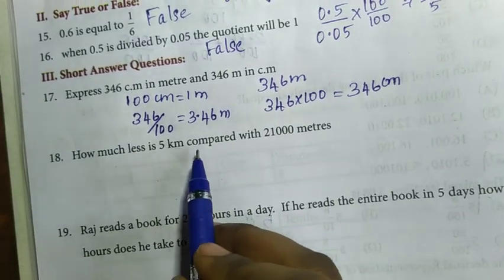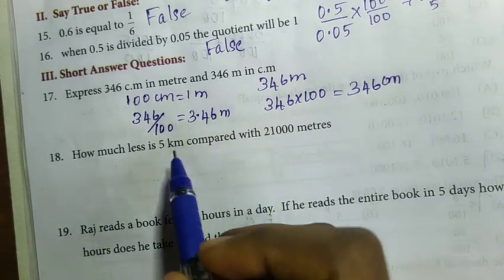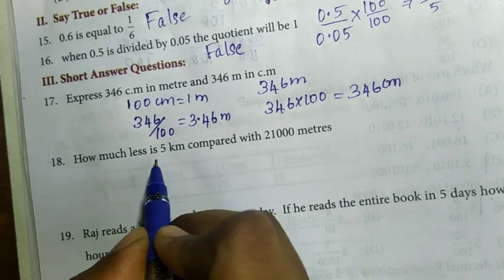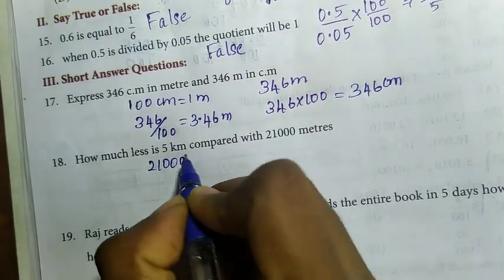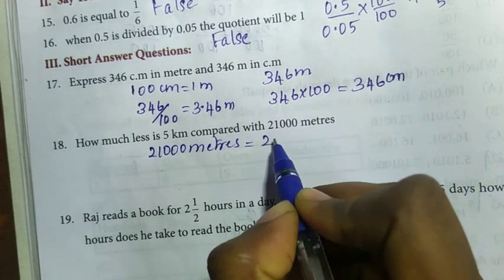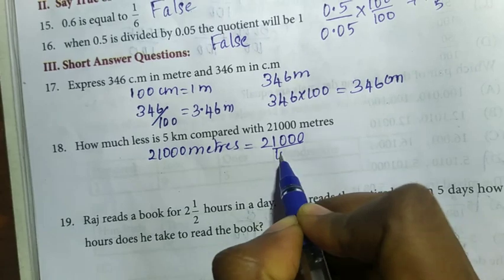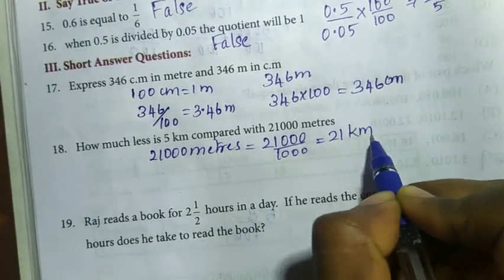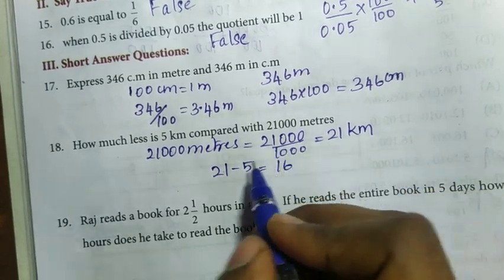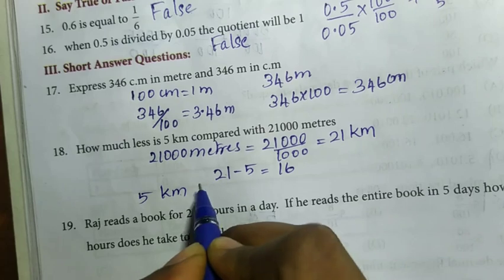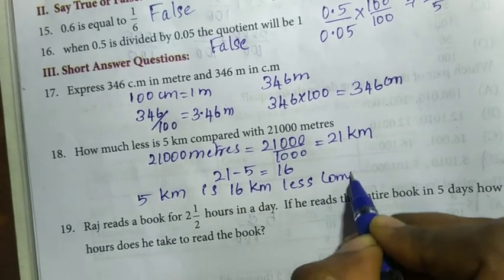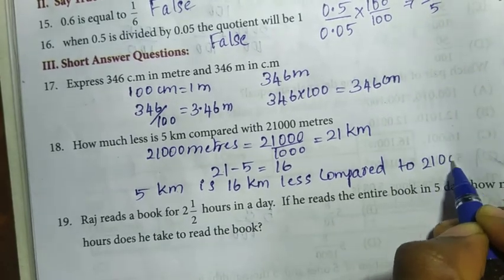18th question: how much less is 5 km compared with 21,000 m? Convert 21,000 m to km: that is 21 km. Then 21 minus 5 gives 16. So 5 kilometers is 16 kilometers less compared to 21,000 meters.